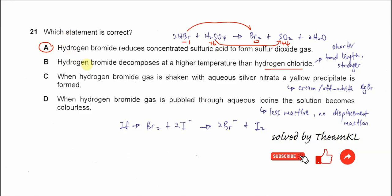Why is C not the answer? When hydrogen bromide is shaken with silver nitrate solution, a yellow precipitate is formed. Yellow is for the iodide, so it should form cream or off-white precipitate.